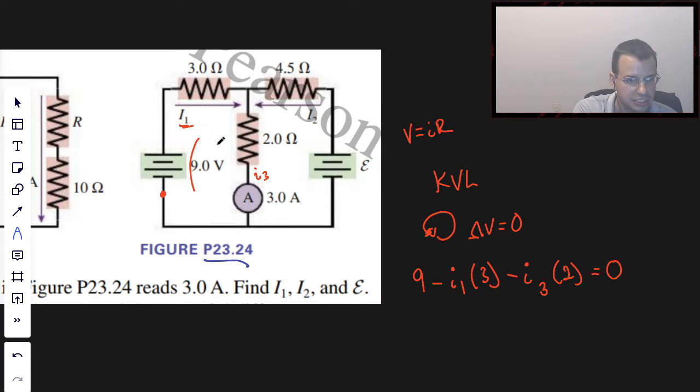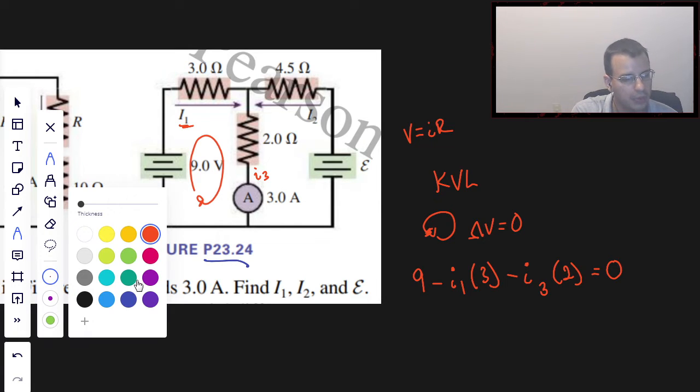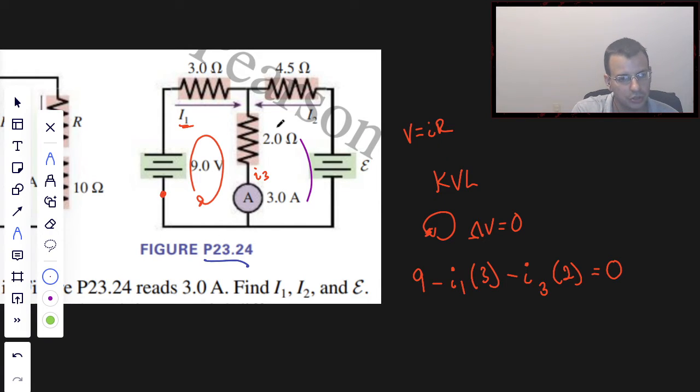All right, so that's this loop right here. Now we're going to do another loop. We basically have two choices. We can do a loop like this, or what I'm going to do is I'm just going to do a small loop like this. I try and do loops in the direction of current. It doesn't really matter, but it means that you're going to have fewer negative numbers.